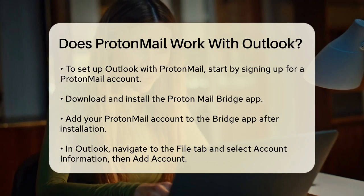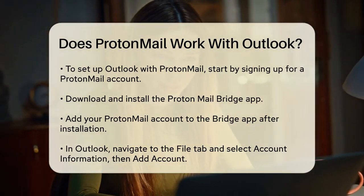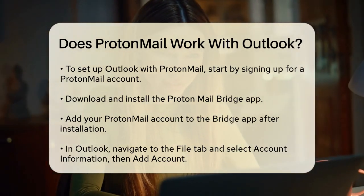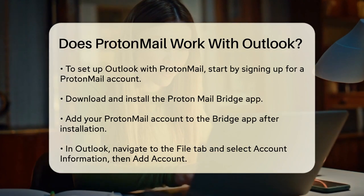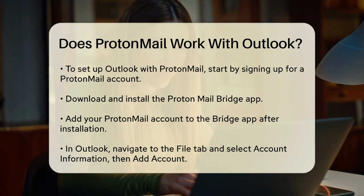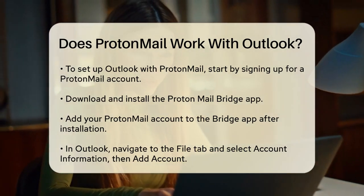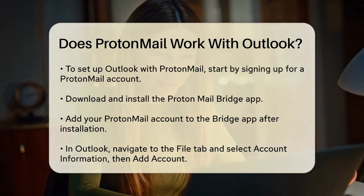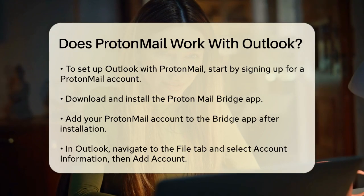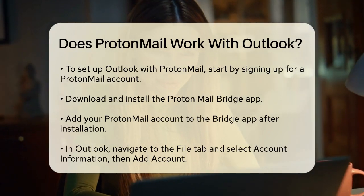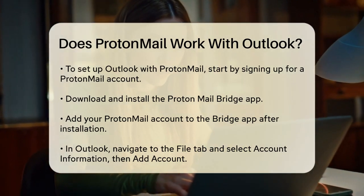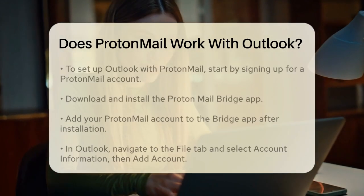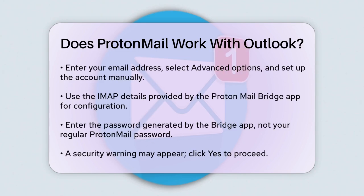Once installed, you add your ProtonMail account to the Bridge app. In Outlook, you go to the File tab, select Account Information, and then Add Account. You enter your email address, select Advanced Options, and choose to set up the account manually. Select IMAP and enter the account details provided by the ProtonMail Bridge app.